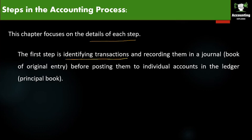After identifying, we have to start recording them in a Journal. The Journal is called the Book of Original Entry, where all the transactions you have identified — the original entries — will be recorded, before posting them to individual accounts in the Ledger.